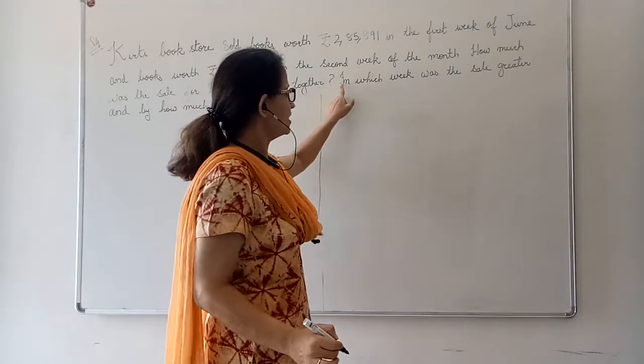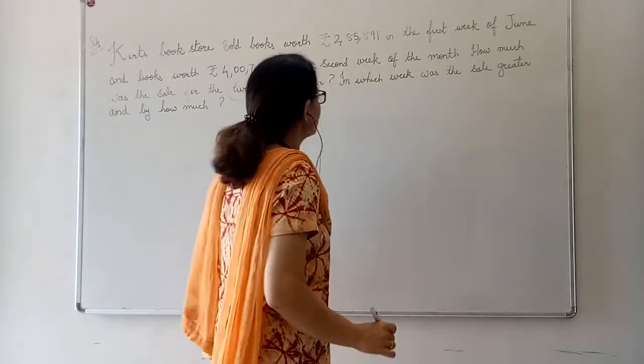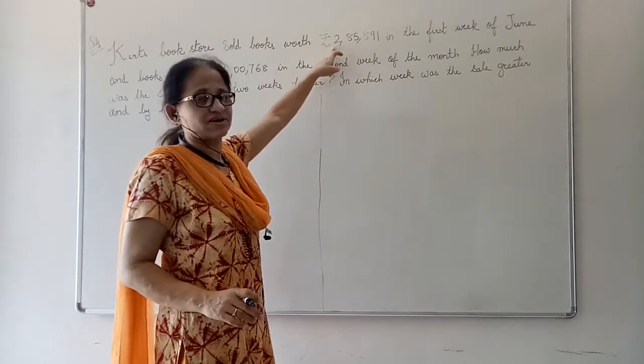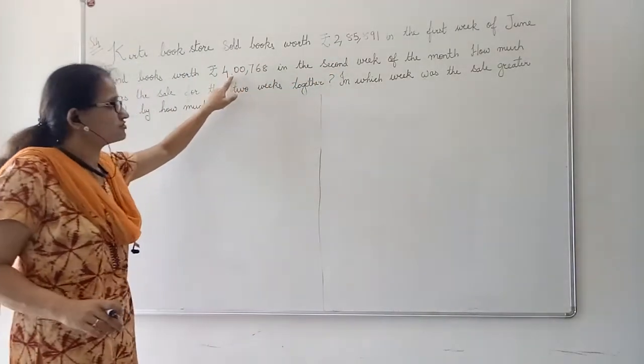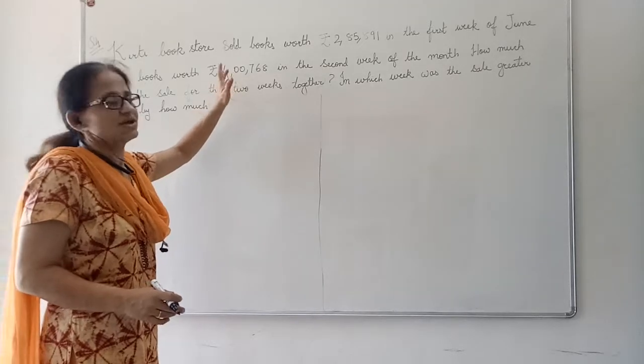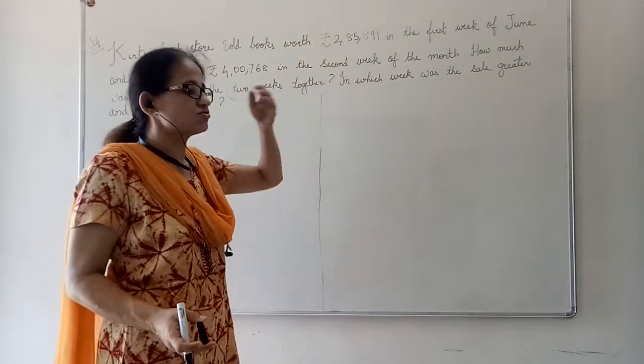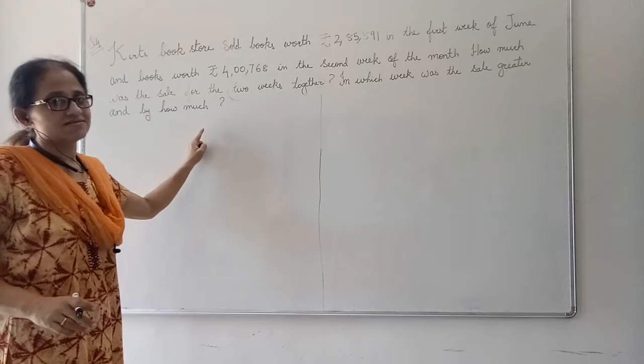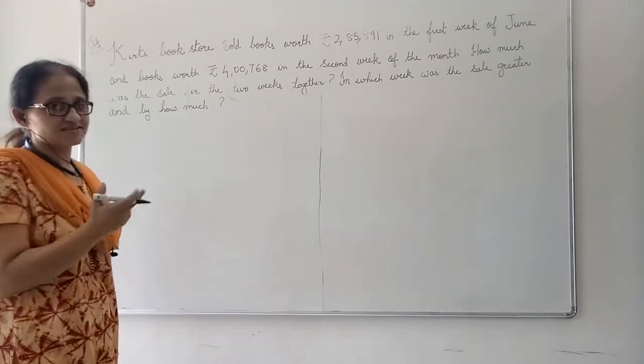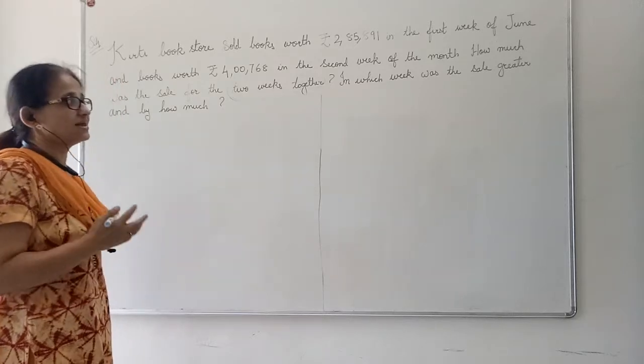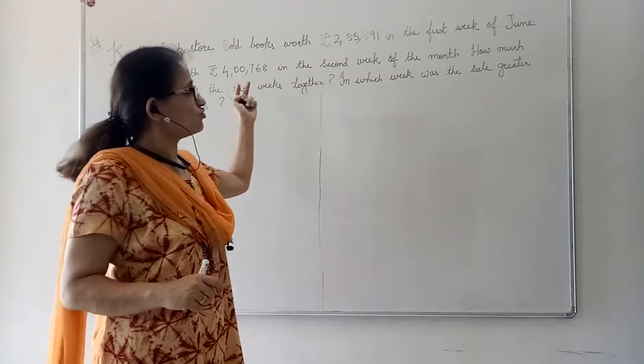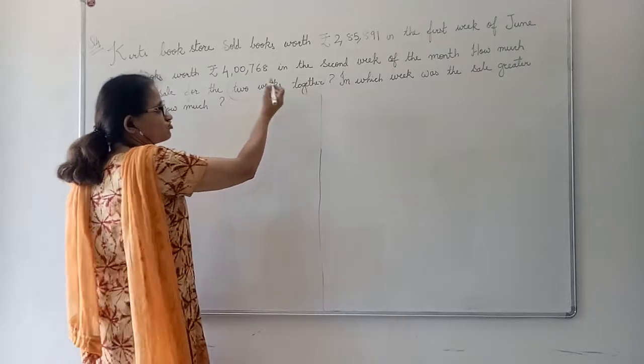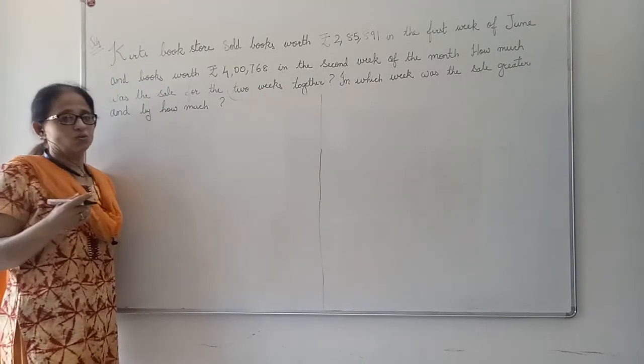There is another question. In which week was the sale greater? Now we have to compare. In first week, the sale was 2,85,891. In the second week, the sale was 4,76,768. Definitely, 4,76,768. So the sale was greater in the second week. But by how much? How much was the sale greater in the second week? So for this question, we need to do subtraction. There are two different questions. In the first one, how much was the sale for the two weeks together? For that part of the question, we have to add.